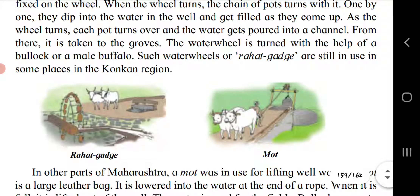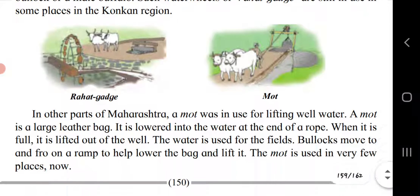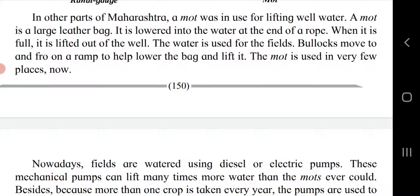In other parts of Maharashtra, a moat was used for lifting well water. A moat is a large leather bag lowered into the water at the end of a rope. When it is full, it is lifted out of the well and the water is used for the fields. Bullocks move to and fro on a ramp to help lower and lift the bag. The moat is used in very few places now.